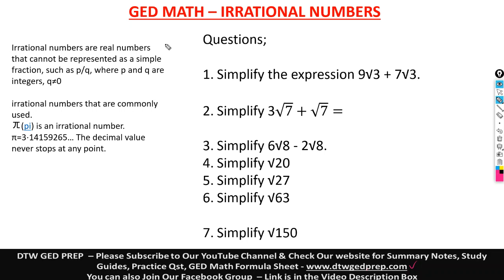Irrational numbers. What are irrational numbers? They are real numbers that cannot be represented as a simple fraction such as 1 over 2. So when you can't express them like this, they're called irrational numbers. A common irrational number is pi. We say it's 22 over 7, but the real value of pi is 3.1415 - the decimal value never stops at any point.